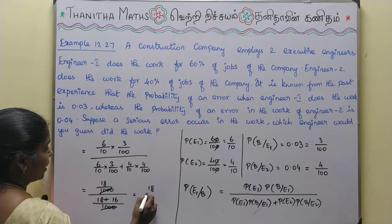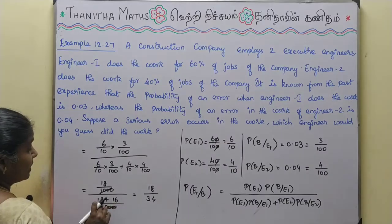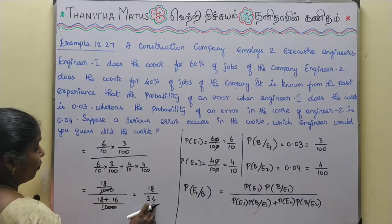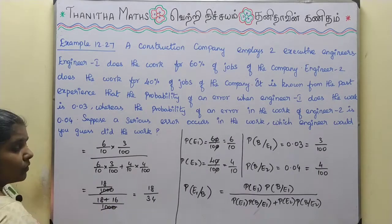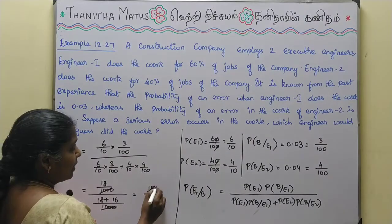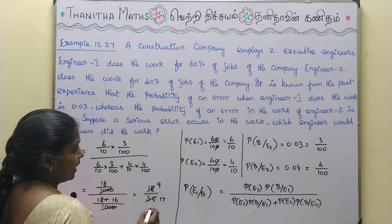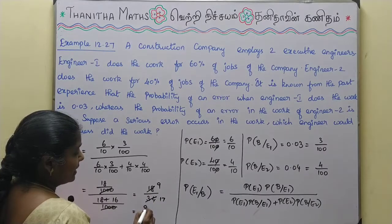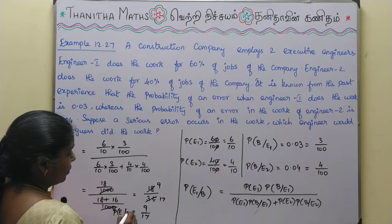Simplifying 18 by 34: 8 plus 4 is 12, carry 1, giving 34. Cancel the common factor of 2: 18 divided by 2 is 9, and 34 divided by 2 is 17. So the value of P of E1 given B is 9 by 17.